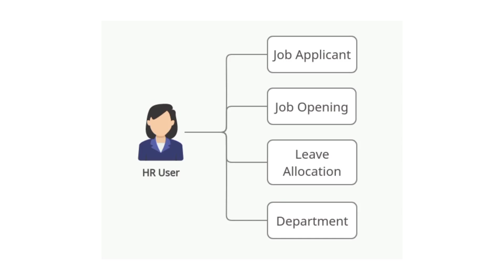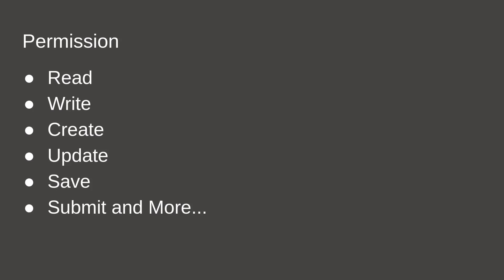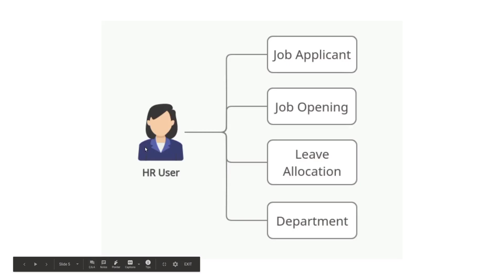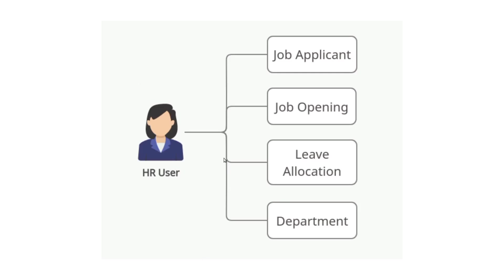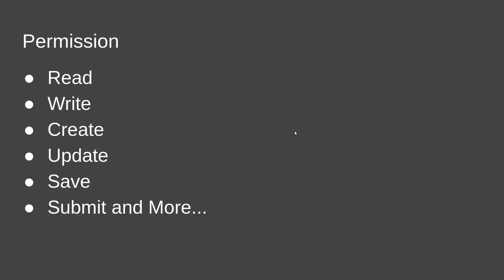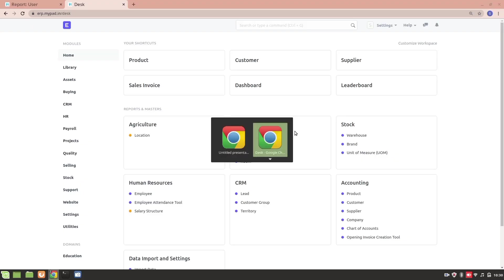Permissions are of different types: read, write, create, update, save, submit, and more. For each role you define various sets of permissions. For example, you might want the HR User to only read the Leave Allocation doctype. You can assign that particular permission to that role. Let's go to the desk and see it in more detail.